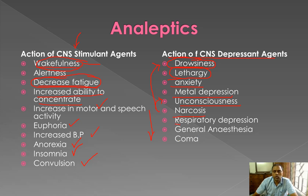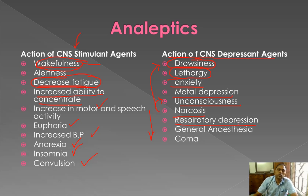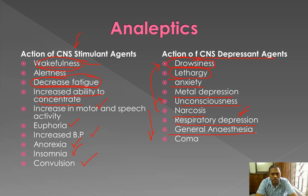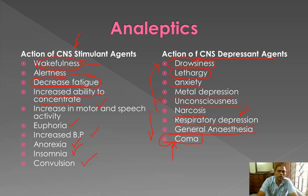CNS depressants can produce respiratory depression — they can lower your respiration rate and produce breathlessness. They can also produce general anesthesia, which is an unconscious condition of the whole body. Beyond anesthesia, they can produce coma, which is a critical condition — the next stage after coma can be death.